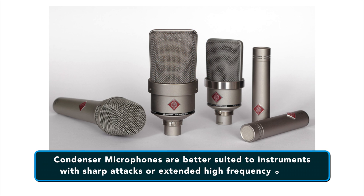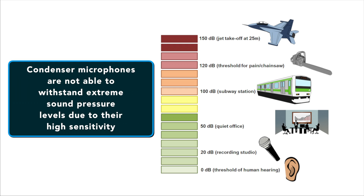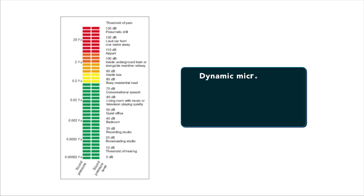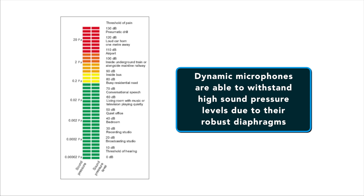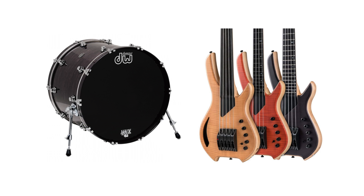This means that condenser microphones are better suited to instruments with sharp attacks or extended high frequency outputs, like drums. However, condenser microphones are not able to withstand extreme sound pressure levels due to their high sensitivity. Dynamic microphones are able to withstand high sound pressure levels due to their robust diaphragms, making them a more suitable choice for instruments such as kick drums or bass guitars.